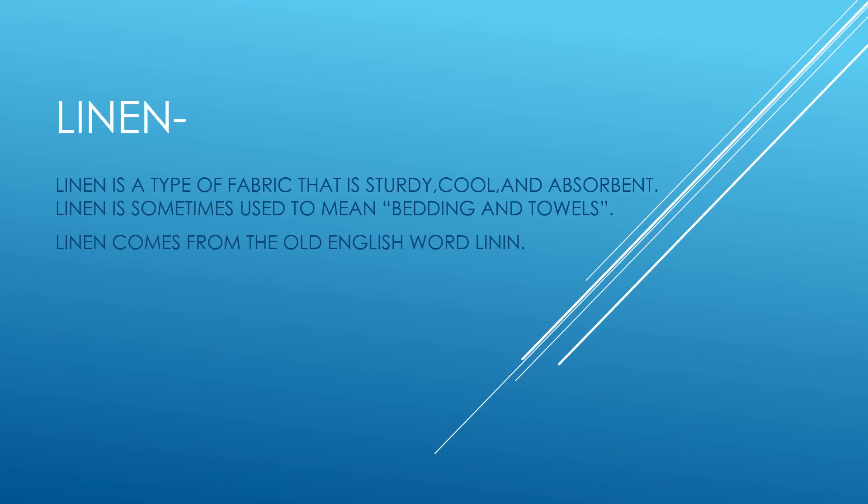Students, from the previous slides, you have learnt about what is a bed, parts of a bed, types of bed, and different sizes of bed. Now let us discuss about bed linen. What is linen? Linen is a type of fabric that is sturdy, cool and absorbent. Linen is sometimes used to mean bedding and towels. Linen comes from the old English word 'linen.' All the cloth materials which are used in a hotel together are termed as linen.